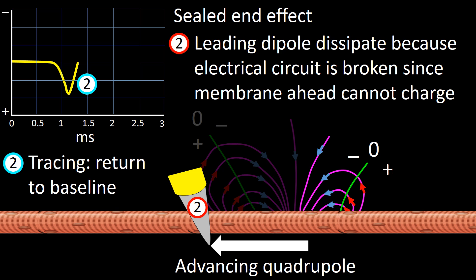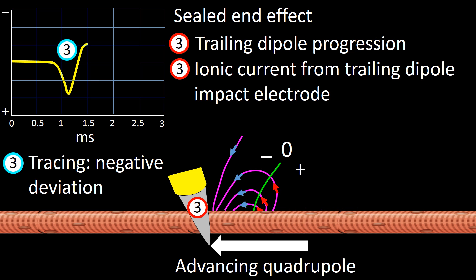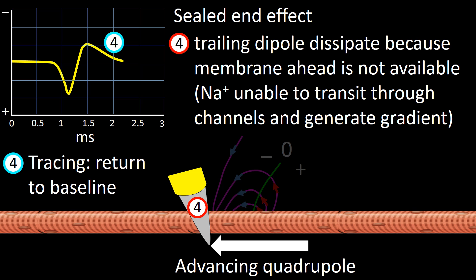During stage 2, the tracing returns to baseline because the leading dipole crashed. During stage 3, a negative wave is present reflecting the ionic current impacting on the electrode. During stage 4, the tracing returns to baseline as the trailing dipole dissipates.